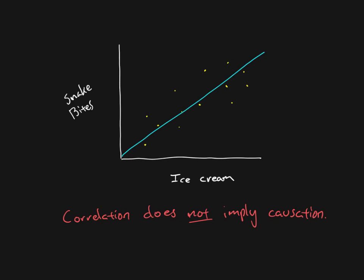But just showing that there's that relationship doesn't mean that the changes in the one variable are causing the changes in the other. The problem is alternative explanations. We have shown that ice cream and snake bites change together, that they co-vary, that there's a relationship. One explanation for that relationship would be that ice cream sales cause people to get more snake bites.